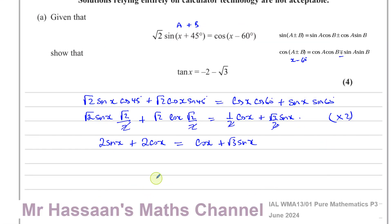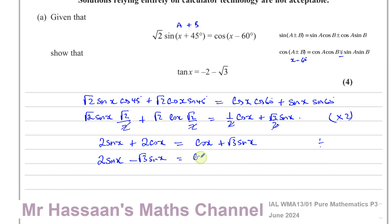At this stage I'll bring the sine x terms together on one side and the cosine x terms on the other side. So I have 2 sine x minus root 3 sine x equals cosine x minus 2 cosine x. Taking sine x as common on the left gives sine x times (2 minus root 3), and the right side becomes minus cosine x.